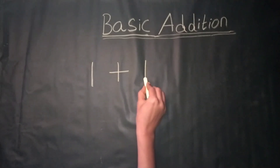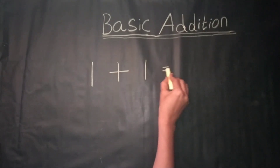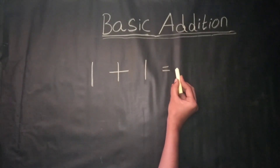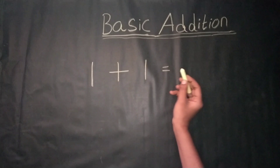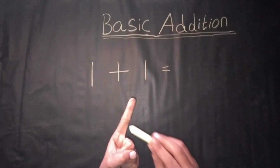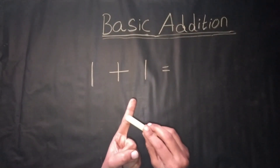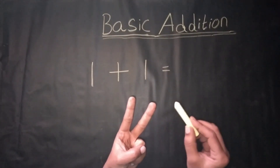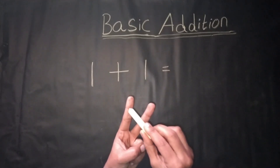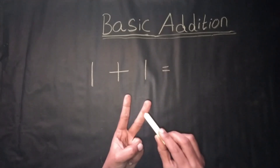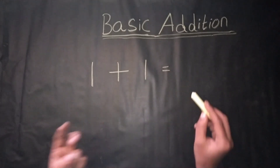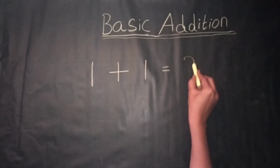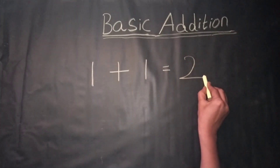1 plus 1 is equal to — counting by fingers, 1 plus 1, count together: 1, 2. We get the answer: 2. 1 plus 1 is equal to 2.